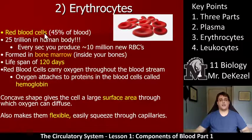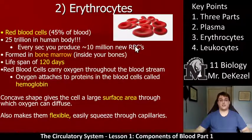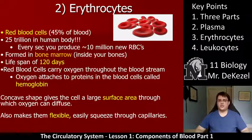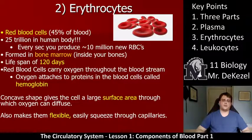Red blood cells, or erythrocytes, are little red discs. There are 25 trillion in the adult human body. Every second you produce about 10 million new red blood cells, which means you also lose about 10 million. They get filtered out in your liver and kidneys, where they can be broken down and in some ways reused — it's a very intricate type of recycling. They are formed in the bone marrow, inside your densest bones, often the hips and femurs, and they have a lifespan of about 120 days, though they can die as early as 10 days if unhealthy.